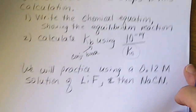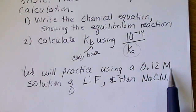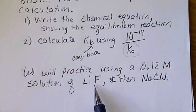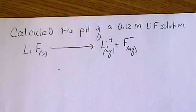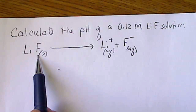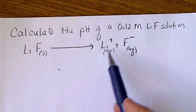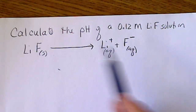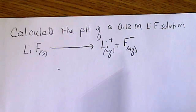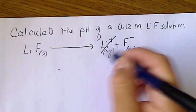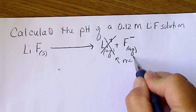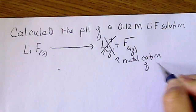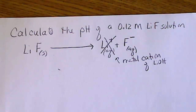We will practice this in two examples. First, we calculate the pH of a 0.12 molar solution of lithium fluoride, then we'll do the same for sodium cyanide. For lithium fluoride, placing the salt in water gives complete dissolution into lithium ions and fluoride ions. Lithium will not affect pH because it is the metal cation of a strong base.